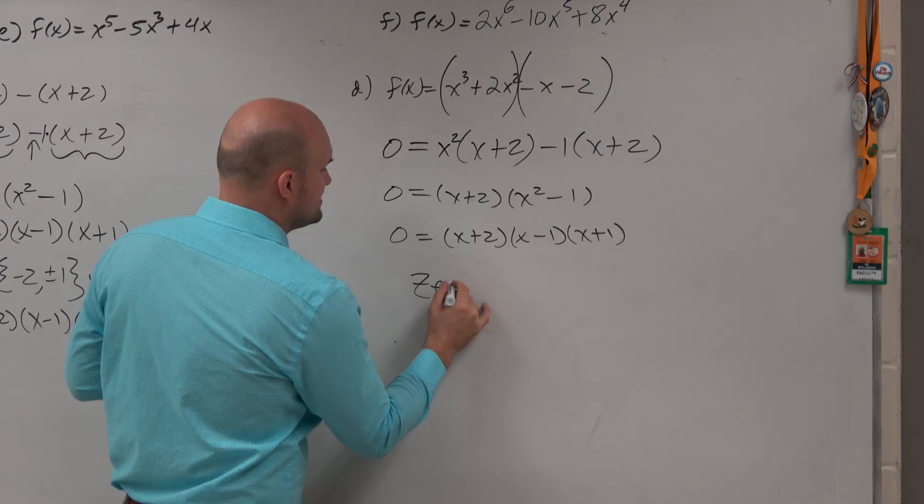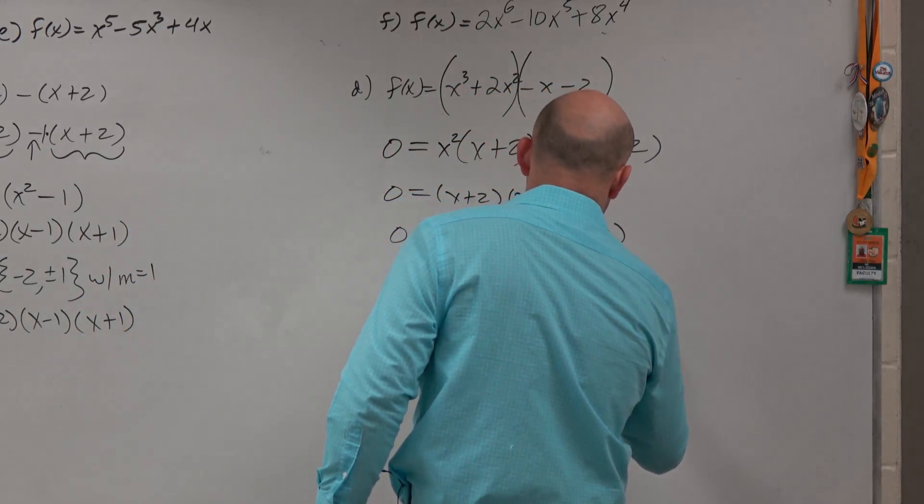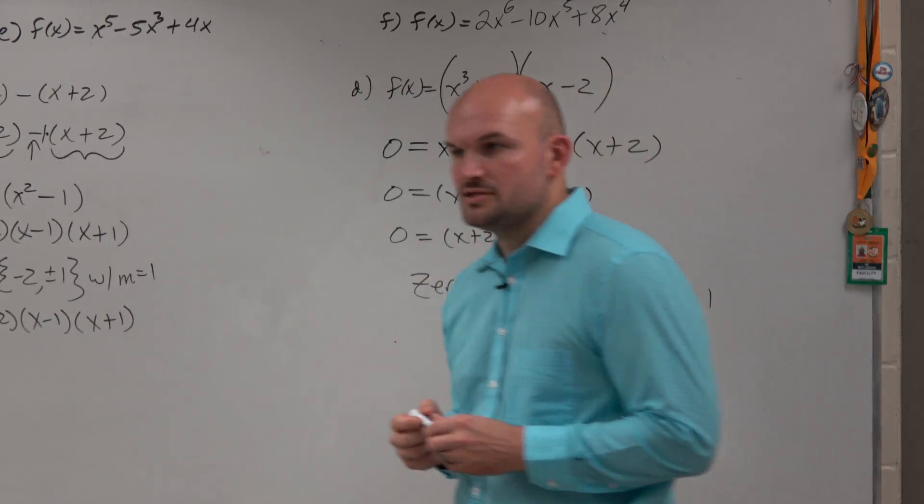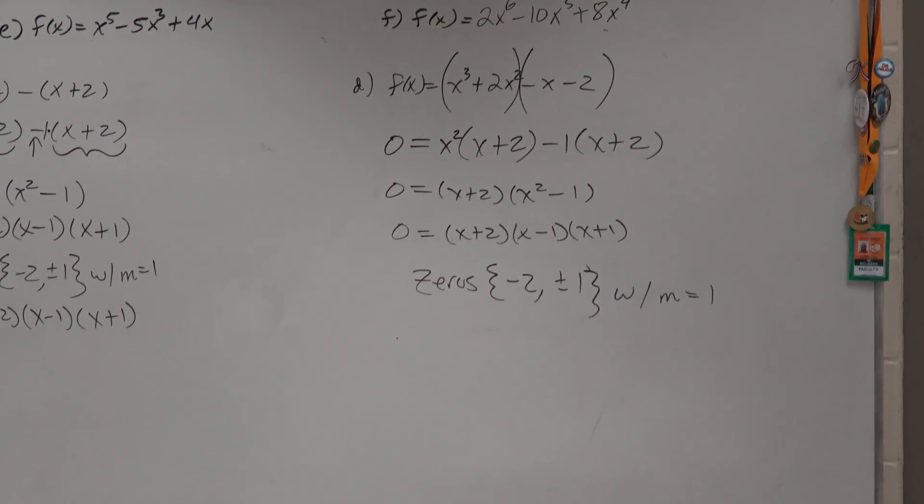And therefore, we can now go ahead and find the zeros. Negative 2 and positive 1, all with a multiplicity equal to 1. So what you guys hopefully have just noticed is I just did the exact same problem four different times.